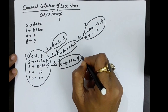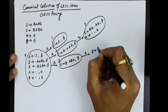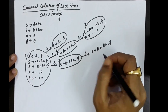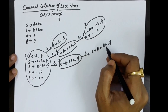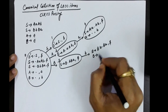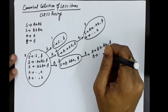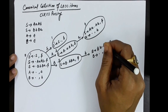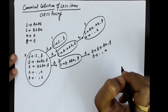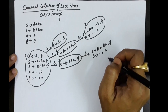From state 3 on transition with small b, we get item 5: S produces capital B small b dot capital B small a with dollar as lookahead. Capital B appears after the dot, so B produces epsilon gives us B produces dot. The lookahead is first of the symbols following this B — small a and dollar — so the lookahead is small a.